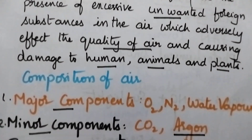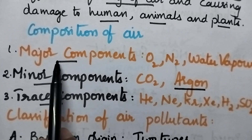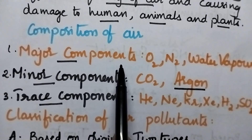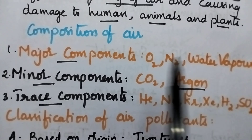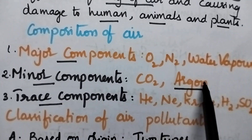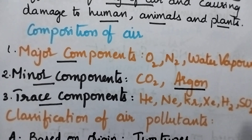One should know what is the composition of air. Air consists of three types of components: major components, minor components and tracer components. Major components include oxygen, nitrogen and water vapor. Minor components include carbon dioxide and argon. Tracer components include helium, neon, krypton, xenon, hydrogen, oxides of sulfur, etc.